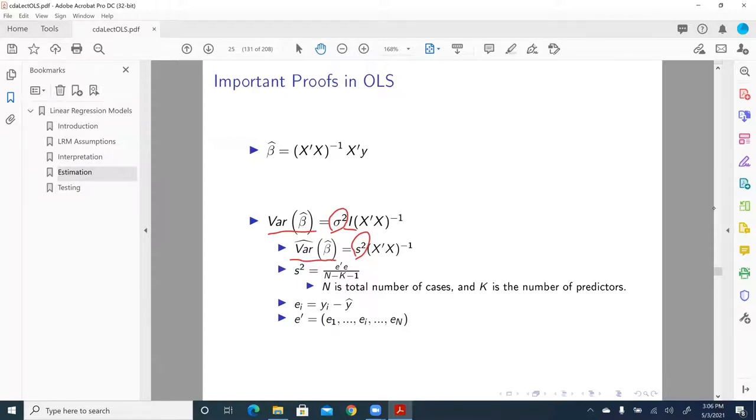Well, s square is a ratio of the sum of the square errors, which is in the numerator, and n minus k minus 1 in the denominator. And here, n is the total number of cases, k is the total number of predictors. And here, why we have minus 1? Well, that 1 is for the intercept.